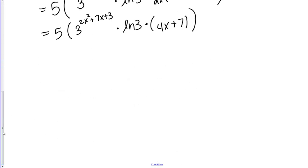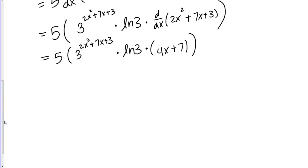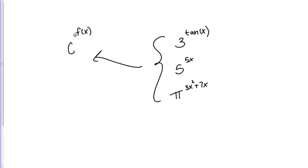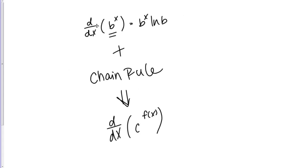This is kind of messy, but it's the product of 4 different things. You can, once again, arrange it however you want. This is 5, let's write it as 5 times natural log of 3 times (4x + 7) times 3 to the (2x² + 7x + 3). This is how you take the derivative of something like C to the f(x). You simply combine the derivative of b to the x of an exponential and then combine that with the chain rule.